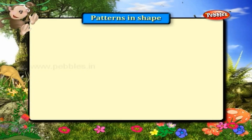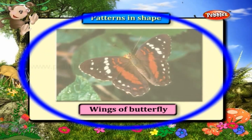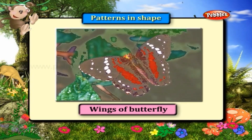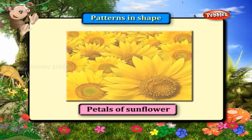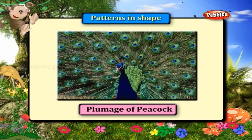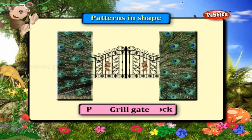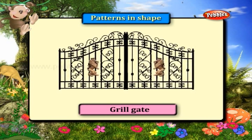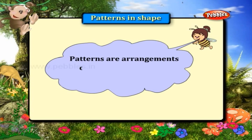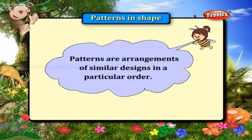Patterns are different shapes that we see in the wings of a butterfly, petals of a sunflower, plumage of a peacock, and on a grill gate. Patterns are arrangements of similar designs in a particular order.